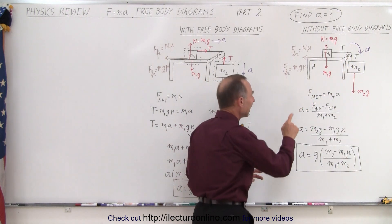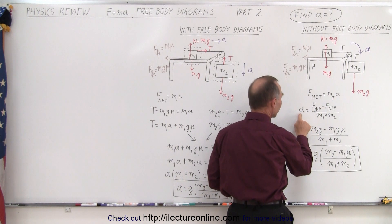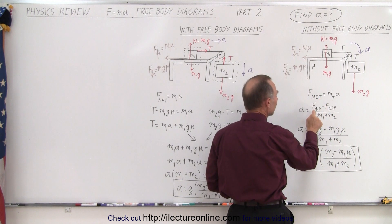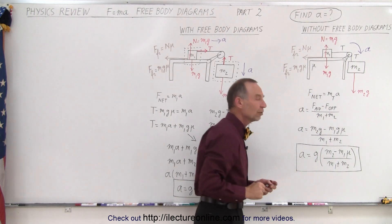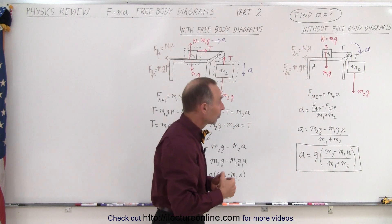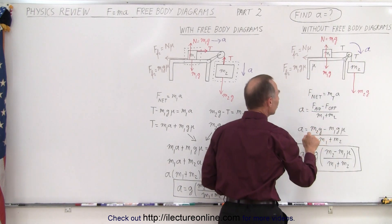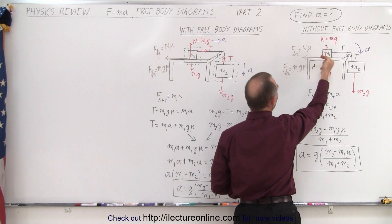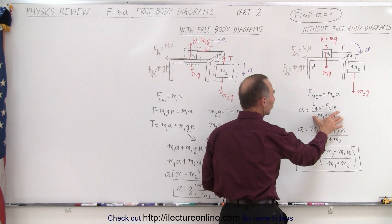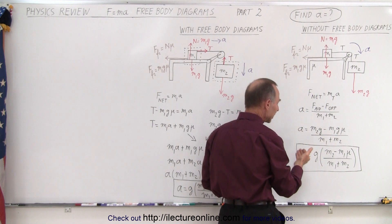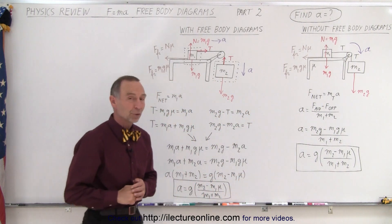Using the equation F net equals the total mass of the system times acceleration, and solving for the acceleration, the net force is all the forces aiding minus all the forces opposing, divided by the sum of the masses. The force aiding — in the same direction as acceleration — is M2g. The force opposing is the friction force, M1g times mu, divided by the total mass. If we then factor out a g, we get A equals g times (M2 minus M1·mu), divided by (M1 plus M2).